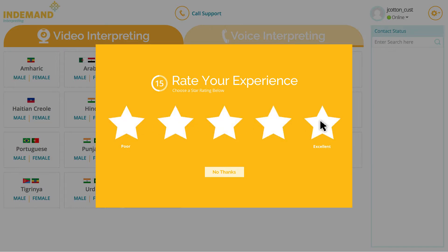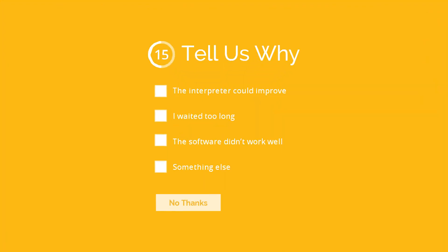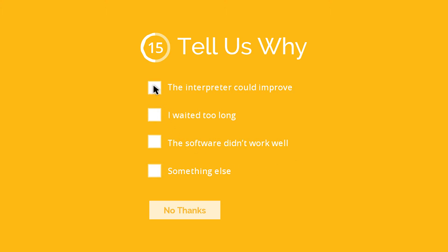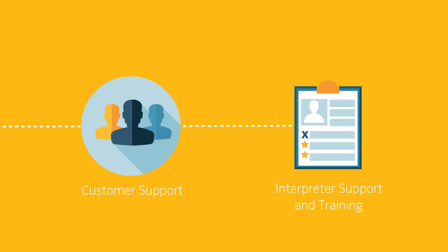We encourage providers to complete this feedback to support our quality commitment. If a session is rated two or lower, a prompt will appear to determine the reason for the low rating. This information is captured and analyzed for corrective action. Email alerts are sent to various members of our customer support team for low rated calls to alert them to possible customer dissatisfaction. Star ratings help In-Demand provide the highest quality VRI experience. The ratings are part of our performance improvement process and alert management to interpreters who may require additional support and training.